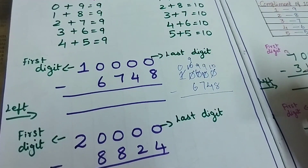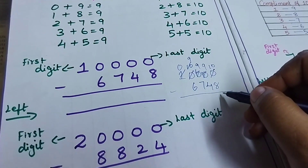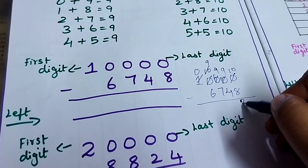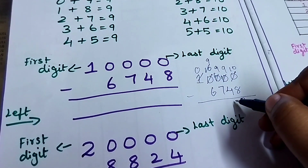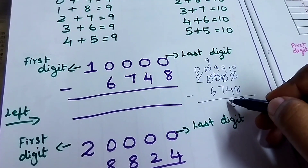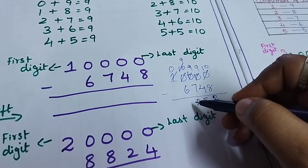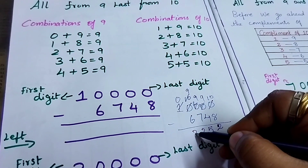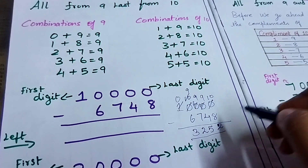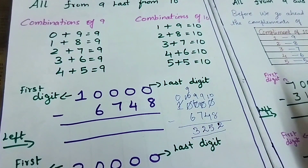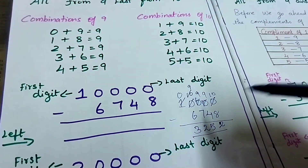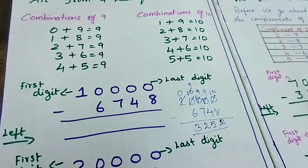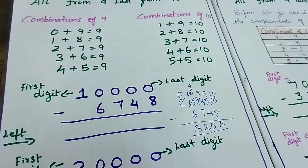Without borrowing, how can you do? So now write the answer. 10 minus 8 is 2. 9 minus 4 is 5. 9 minus 7 is 2. 9 minus 6 is 3. So the last is 0. So 3,252 is your answer. Now without solving and borrowing like this, how can we solve it? Very simple. Remember these rules.